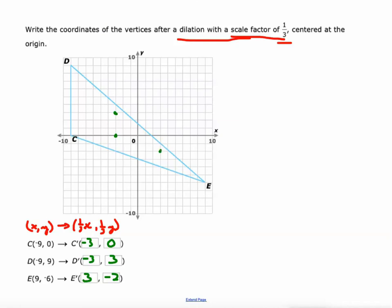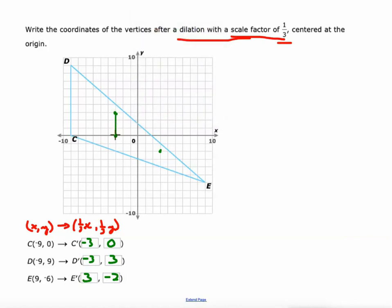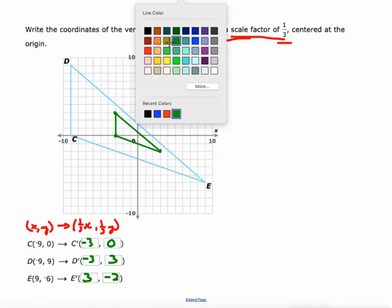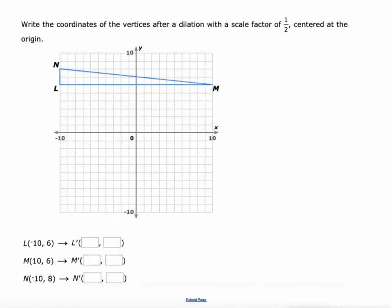When we plot these points negative 3, 0, negative 3, 3, and 3, negative 2, we get this. Notice again all the lines are parallel to the corresponding lines on the original image. And I think we'll also draw from the origin to the new vertice, noticing how it goes right through the old vertice as well.